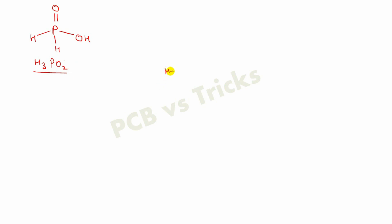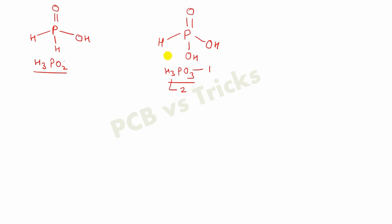Now we will see the structure of H3PO3. You will follow the same steps — place one oxygen at the double bond and one OH group. You can see that one oxygen and two hydrogens are remaining, so you place another OH group and then put the remaining hydrogen at the last position. In this way, the structure of H3PO3 is completed.